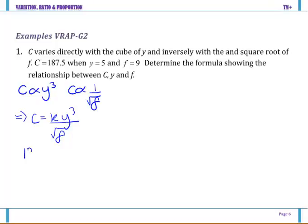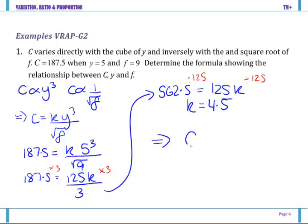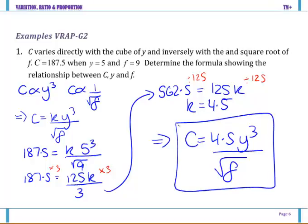It says that c is 187.5 when y is 5 and f is 9. From there I get 187.5 equals 125k all over 3. You would work down your page of course. Multiply both sides by 3 and you get 187.5 times 3 gives me 562.5 equals 125k. Divide both sides by that 125 and you get k equals 4.5. So our formula is c equals 4.5 y cubed all over square root of f. So you can see that combined variation happening.